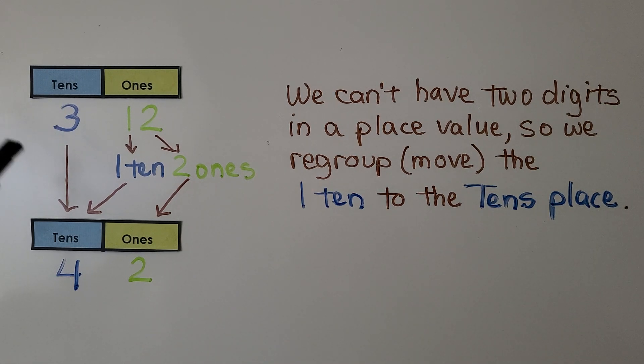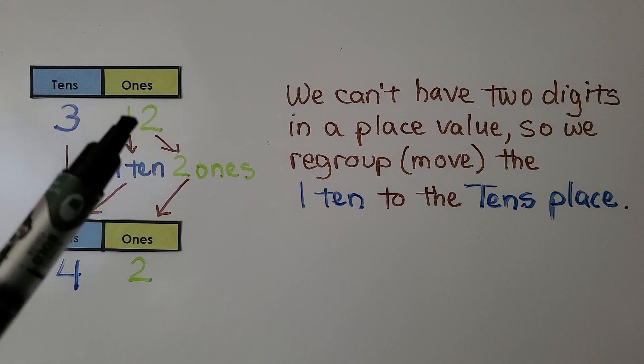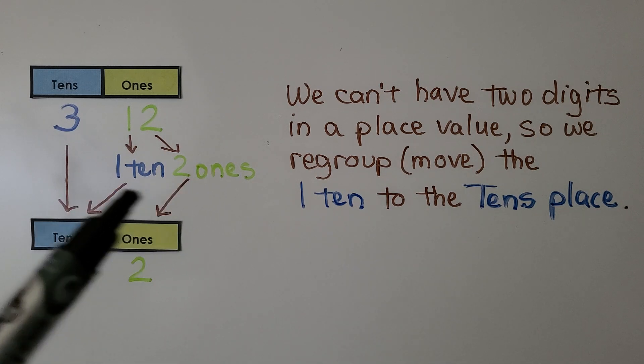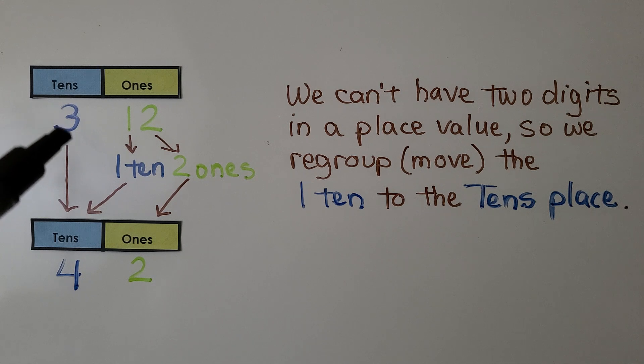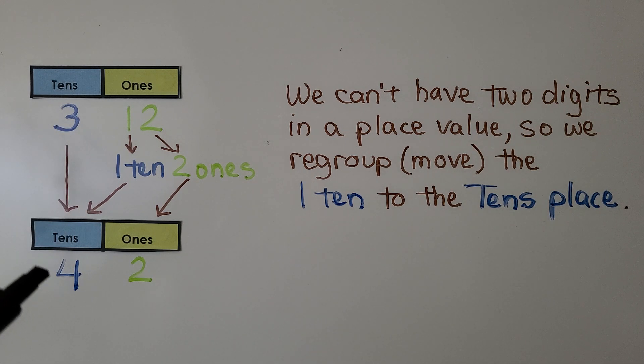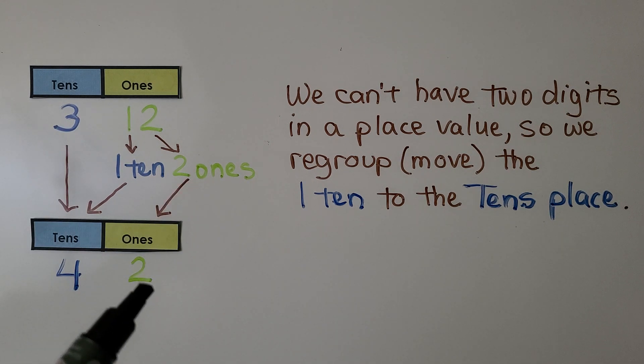Three tens, twelve ones. Twelve ones is actually one ten and two ones. We give that ten to the tens place. Now we have three tens, one ten that makes four tens, and we bring the two ones down because we can't have two digits in a place value. So we regroup, we move the one ten to the tens place.